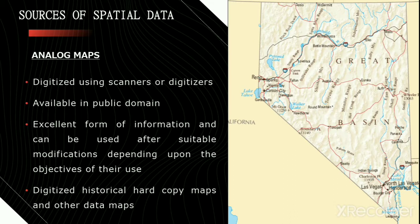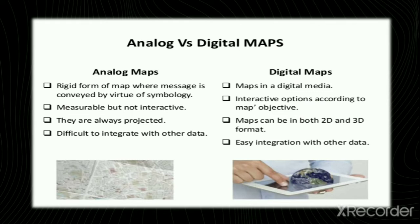Now let's look into analog maps in detail. Analog maps are those maps obtained after digitizing with the help of scanners or digitizers. Such types of maps are available in the public domain and are an excellent form of information which can be used with suitable modifications based on our objective. Digitized hardcopy historical maps and other data maps are examples of analog maps.